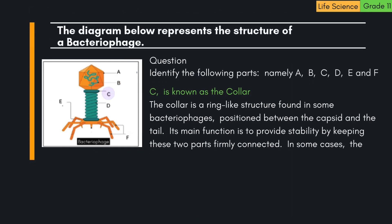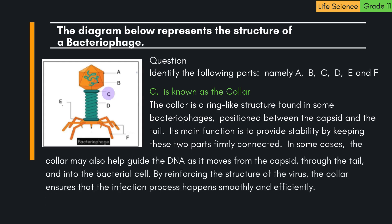C is known as the collar. The collar is a ring-like structure found in some bacteriophages, positioned between the capsid and the tail. Its main function is to provide stability by keeping these two parts firmly connected. In some cases, the collar may also help guide the DNA as it moves from the capsid, through the tail, and into the bacterial cell. By reinforcing the structure of the virus, the collar ensures that the infection process happens smoothly and efficiently.